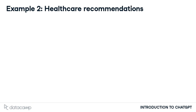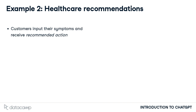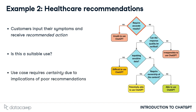Let's now say that we work for a major healthcare provider, and to alleviate increasing wait times to see a doctor, we want to provide an online treatment recommendation system built on ChatGPT. People can input their symptoms, and ChatGPT would be used to provide the best course of action — taking over-the-counter medication, consulting with a doctor, or visiting the hospital. This use case requires a high level of precision, due to the potentially serious implications of incorrect recommendations, and ChatGPT cannot provide this certainty. This is an unsuitable application of ChatGPT.